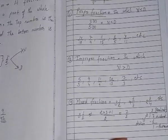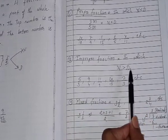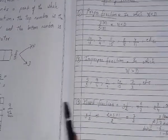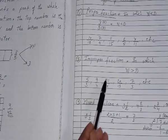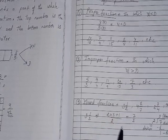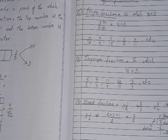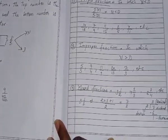Now, the second type is improper fraction. What is improper fraction? In which the numerator is greater than denominator. For example, 5 by 3, 9 by 4, 11 by 9, 20 by 13, 7 by 3, etc. So, this is improper fraction.